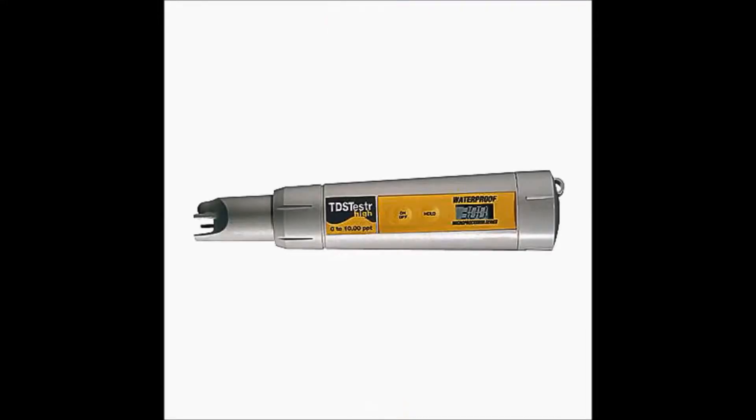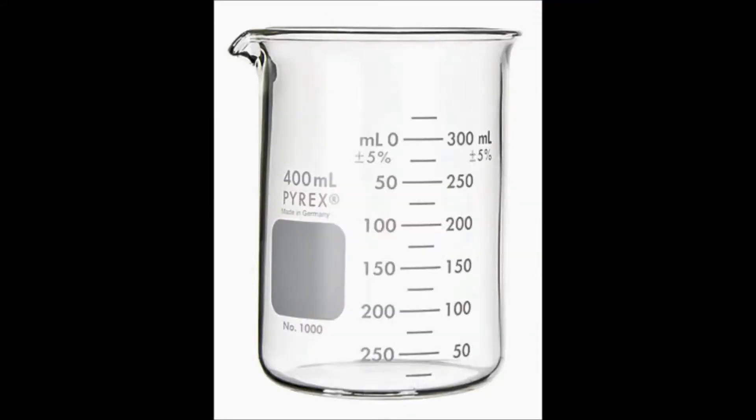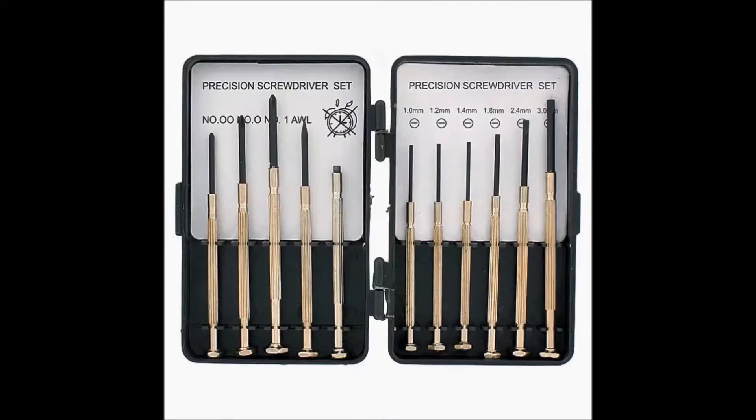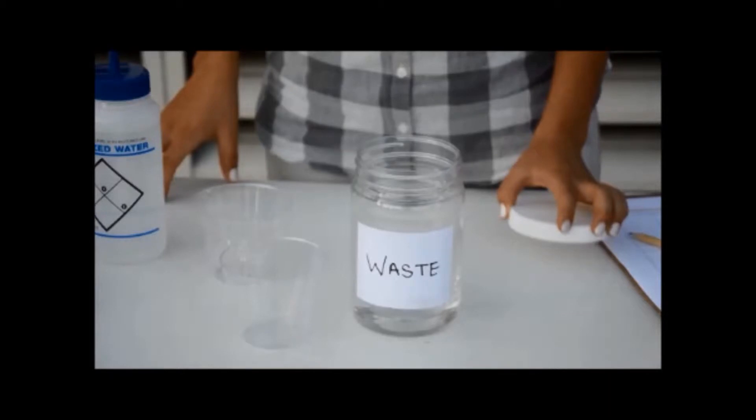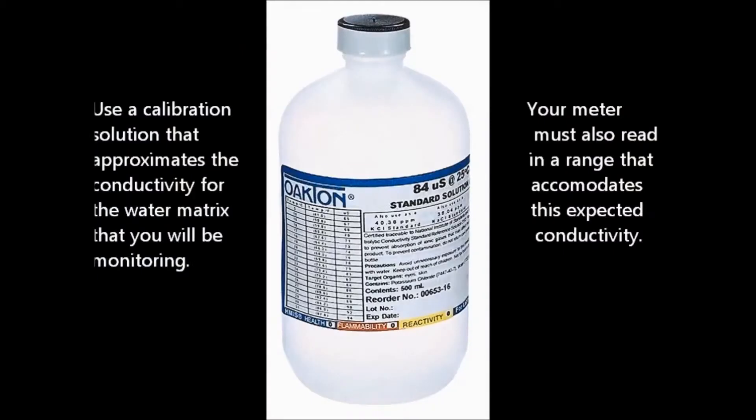In addition to your meter, you'll need some other supplies: perhaps a set of screwdrivers, a squeezable squirt bottle filled with DI water, a closable waste container, and your calibration solution.